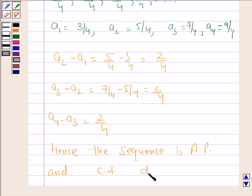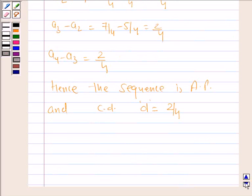that is d, is equal to 2/4. Now we have to find the 9th term. We know that a_n is equal to a plus (n minus 1) times d.